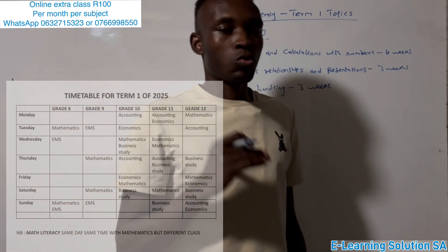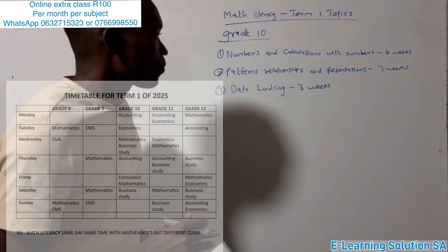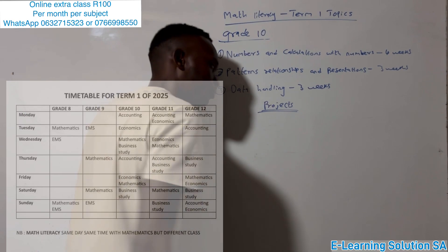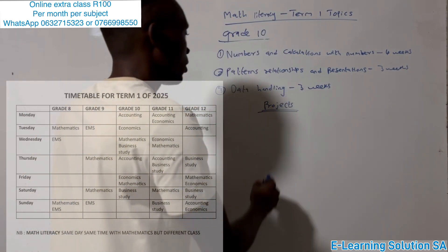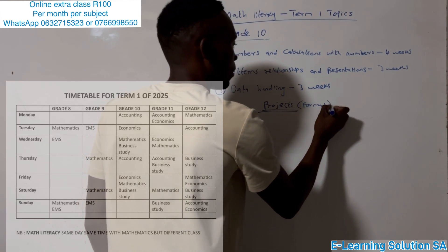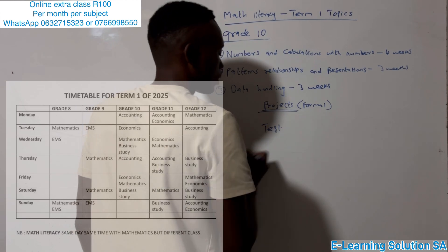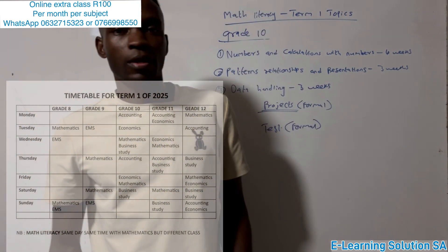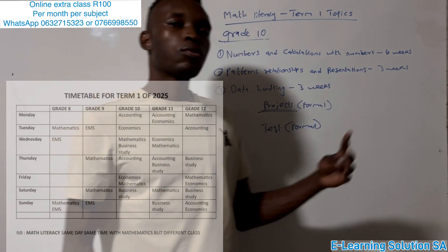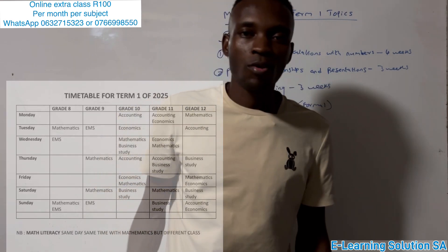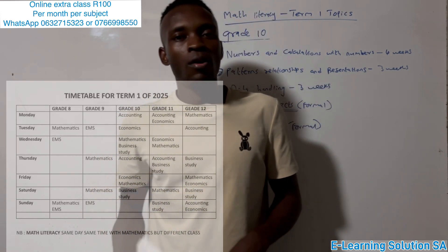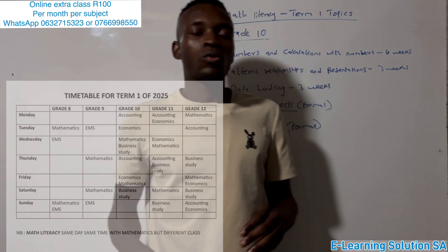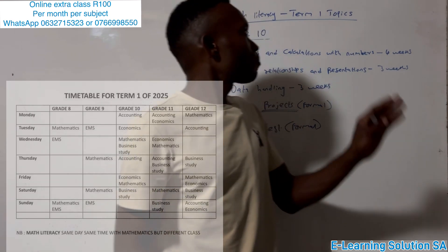So these are the three chapters for Term 1. What you need to know is that for topics one and two you are going to have a project — done at home, not at school — and this is a formal assessment. You are also going to write a test, which is also formal. The test will be written around March or end of February, and the project is due middle or beginning of February, depending on the province. All three topics require a lot of practice. You must pass Term 1 very well.